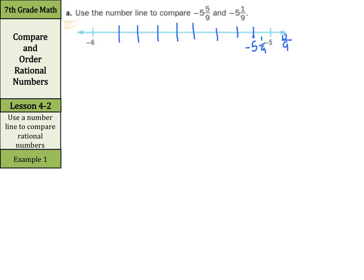I'm going to have negative 5 and 1 ninths close to the negative 5, and then I have negative 2 ninths, negative 3 ninths, negative 4 ninths, negative 5 ninths. So I have negative 5 and 5 ninths right there. And if I want to compare the two, 0 is somewhere out here. The further you are to the left away from 0, the smaller you are. So negative 5 and 5 ninths is going to be less than negative 5 and 1 ninths.